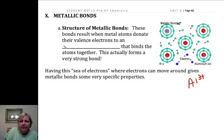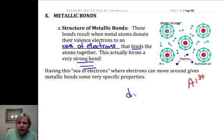These bonds result when metal atoms donate their valence electrons to a sea of electrons that binds the atoms together. Not sure what the original word here was, but I like this better. We call it a sea of electrons, and this attraction between the sea of electrons and the different metal ions actually binds the ions together very, very strong.